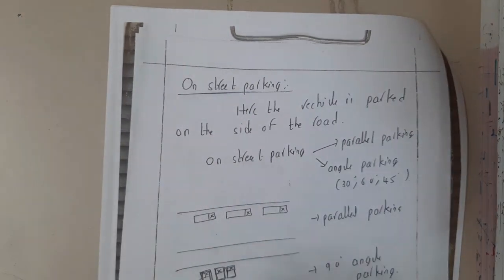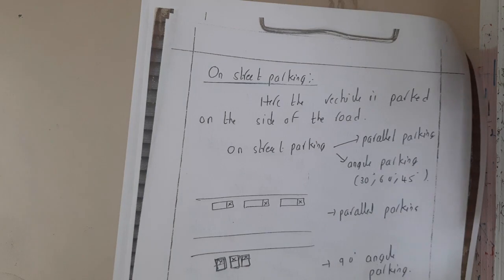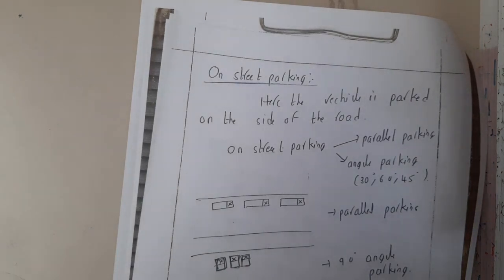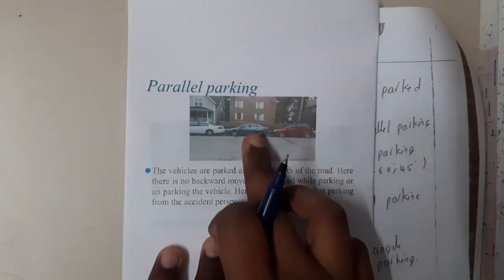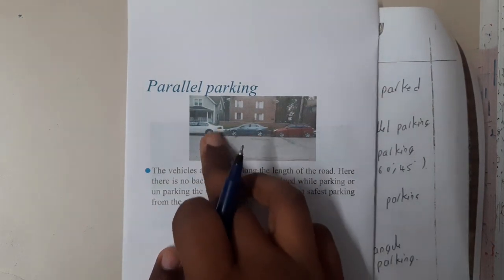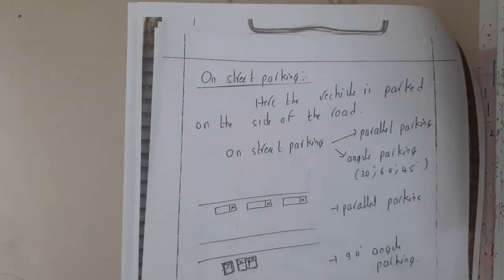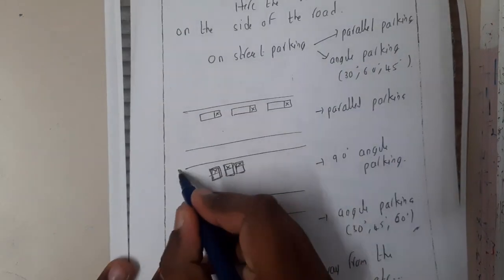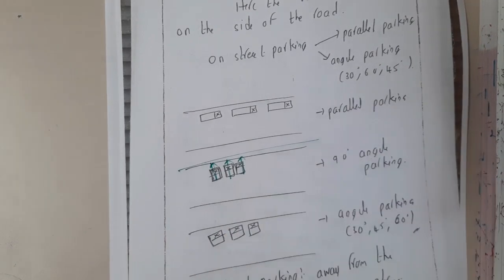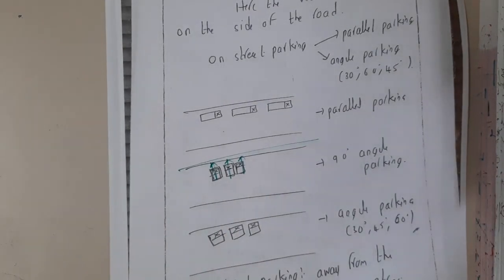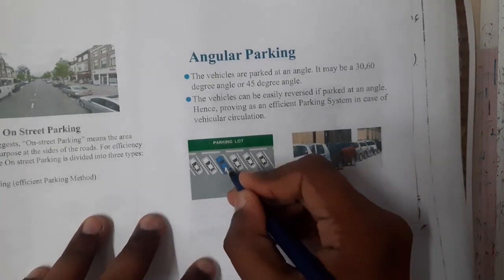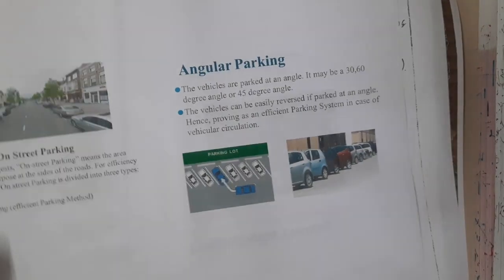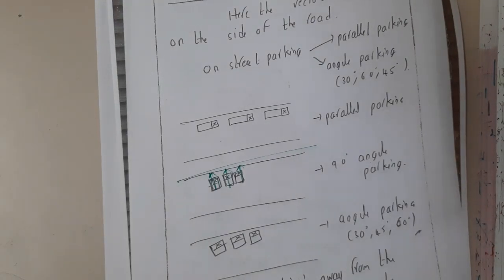Parallel parking means one vehicle after the other, like a train. For example, a red car is parked behind a gray car, and the gray car is parked behind a white car — one after the other. Similarly, 90-degree parking is when vehicles are parked exactly perpendicular to the road. Angular parking is when vehicles are parked at an angle, as you can observe in the example shown.